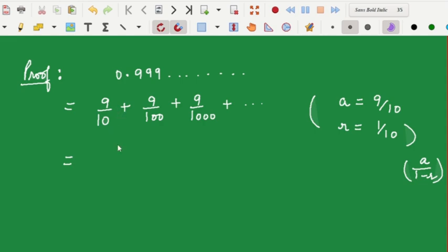So if you look at it as a geometric series sum, then it boils down to 9 over 10 upon 1 minus 1 over 10, a by 1 minus r. That's effectively 9 over 10 by 9 over 10 which means it's equal to 1. So that means 0.999 running up to infinity is indeed equal to 1.